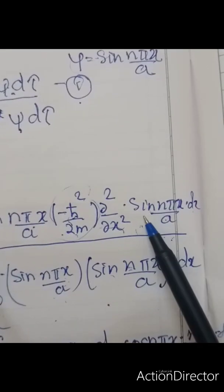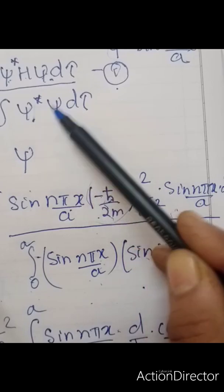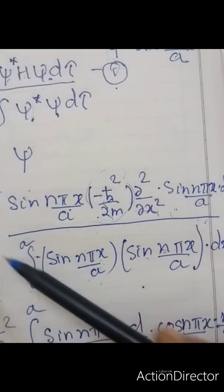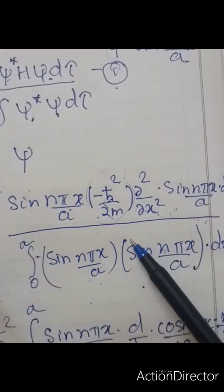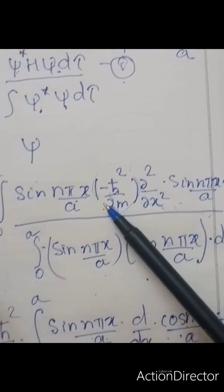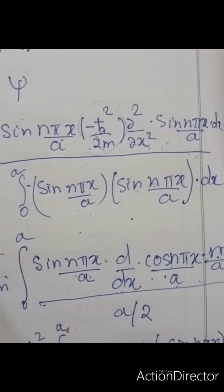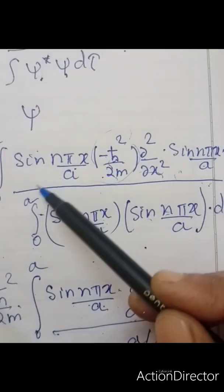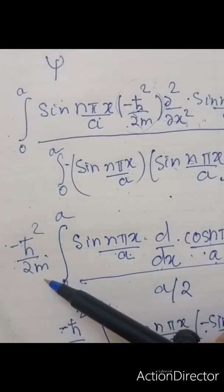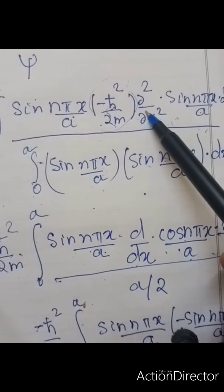Substituting psi equals sine(n*pi*x/a) into the energy expression, psi* is sine(n*pi*x/a) and H is minus h-bar squared upon 2m times d-squared/dx-squared, acting on sine(n*pi*x/a) dx. In the denominator we put psi* and psi accordingly. Since the constant minus h-bar squared upon 2m is independent of x, it is taken outside the integral.